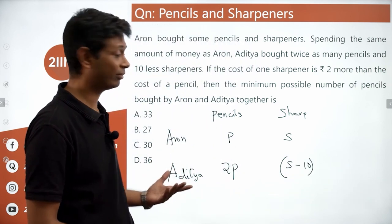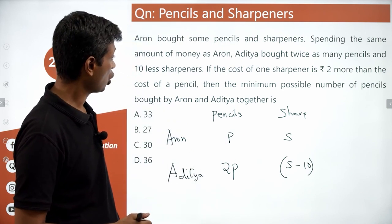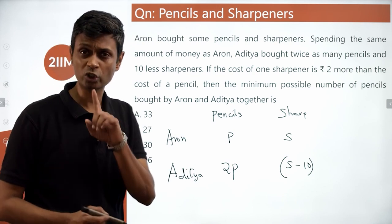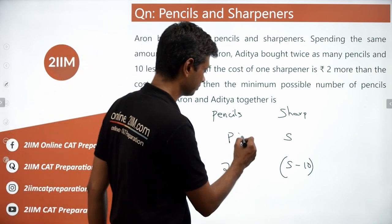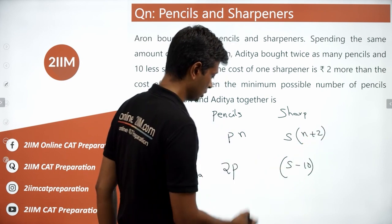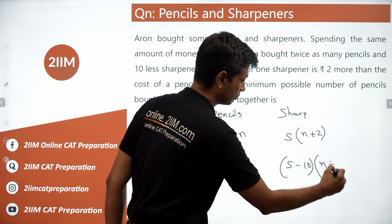If the cost of pencil and sharpener were the same, life would have been easy. It's not the same. The cost of one sharpener is rupees 2 more than cost of a pencil. So cost of one pencil, if it were n, cost of one sharpener is n plus 2.